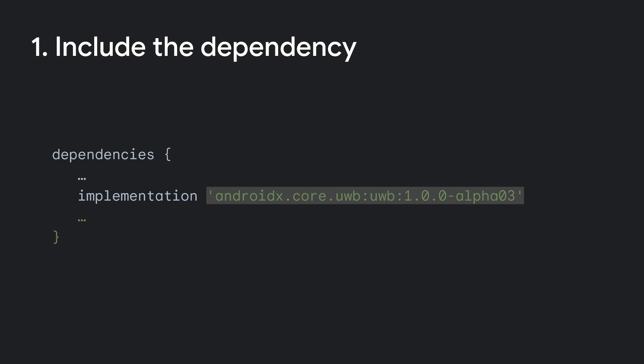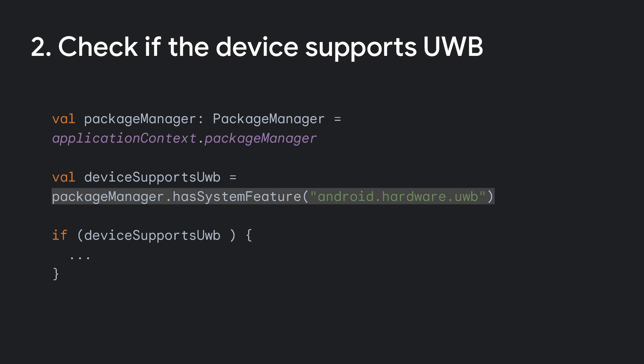First of all, you need to add the library dependency in your project configuration. In this example, we're setting it to the latest version, Alpha 3. Then, as good practice, always check if the Android device supports Ultra Wide Band. Pixel 6 and 7 Pro and some of the latest Samsung and Xiaomi devices already do. You can query for this feature using the hardware UWB string in Package Manager.